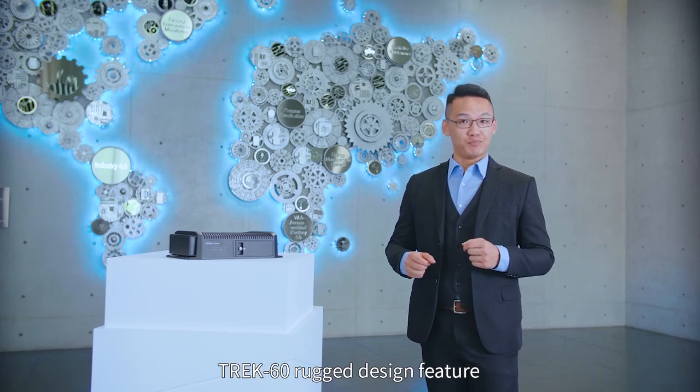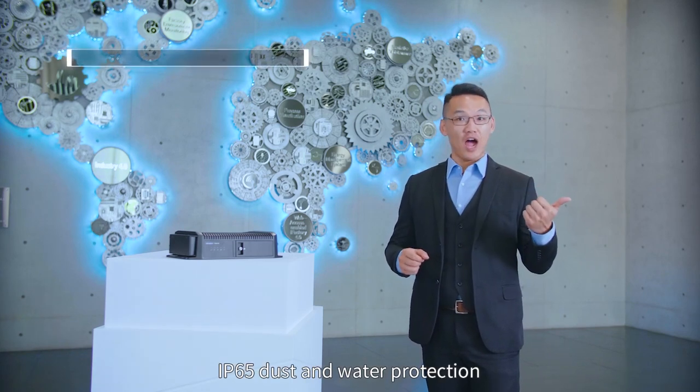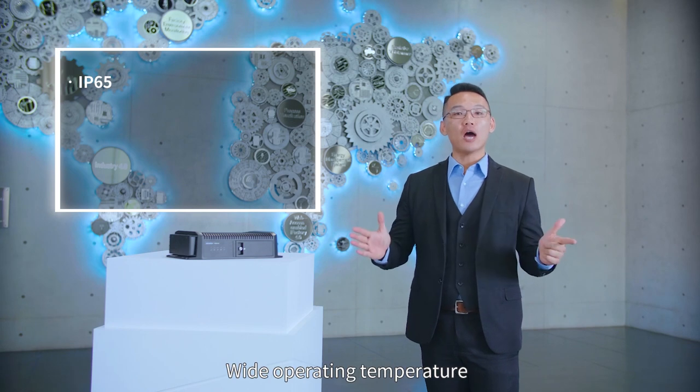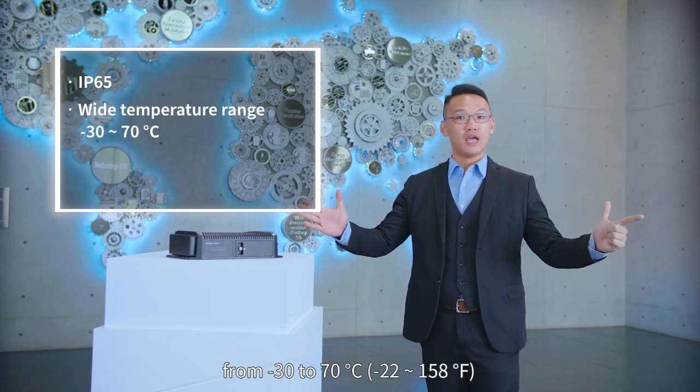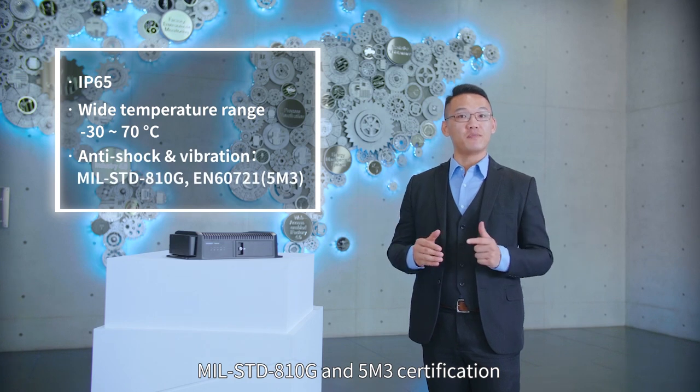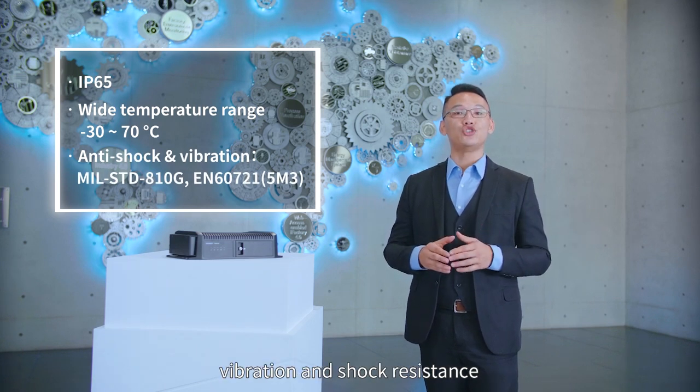Track60's ROCC design features include IP65 protection, a wide operating temperature from minus 30 to 70 degrees Celsius, military standard and 5M3 certified vibration and shock resistance.